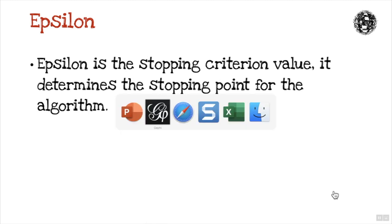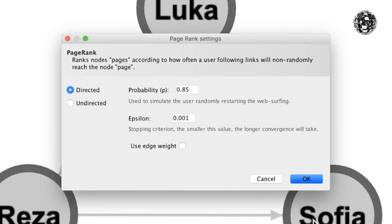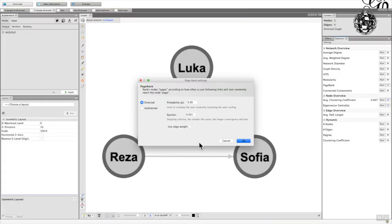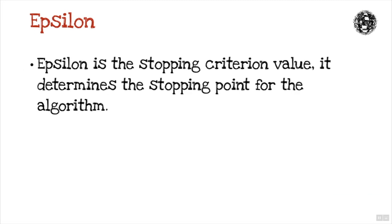Epsilon, which we saw as well in Gephi, is the stopping criterion value. It determines the stopping point for the algorithm. Because of the recursive nature of the calculation, it needs to stop at some point, and it's usually quite a small number to put in.